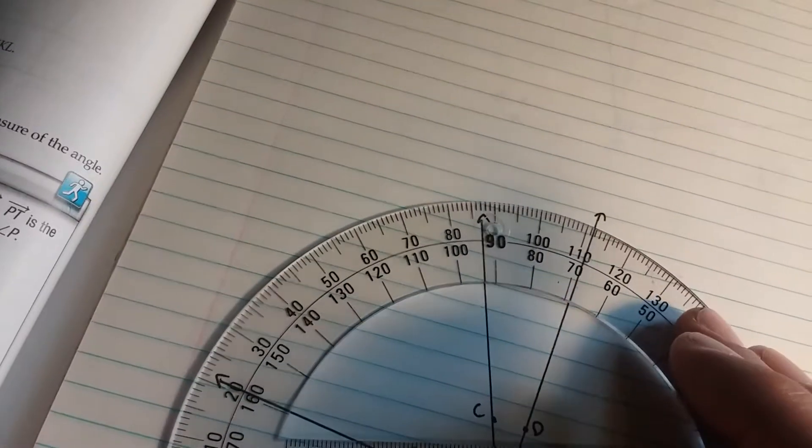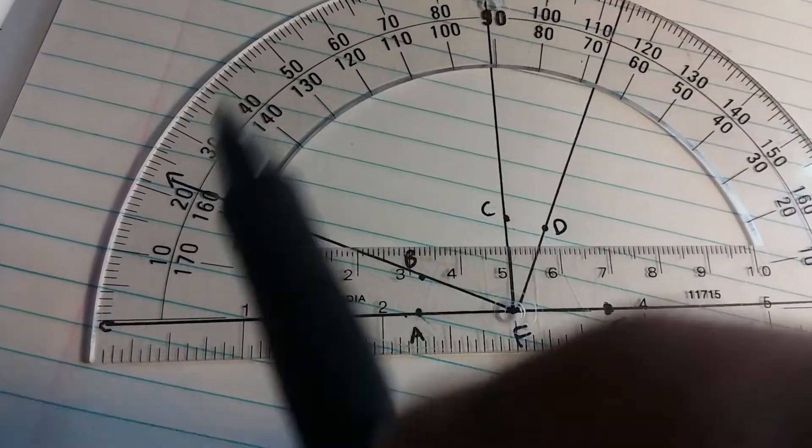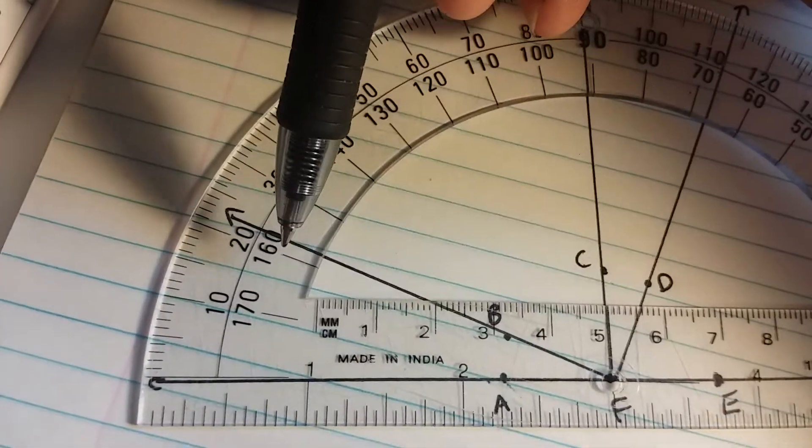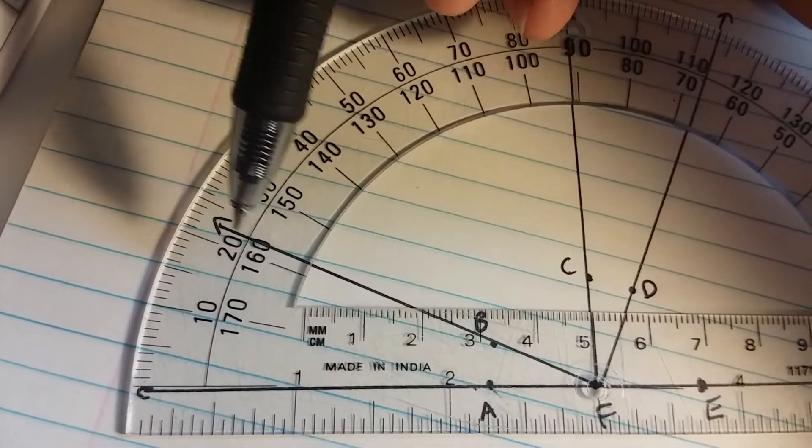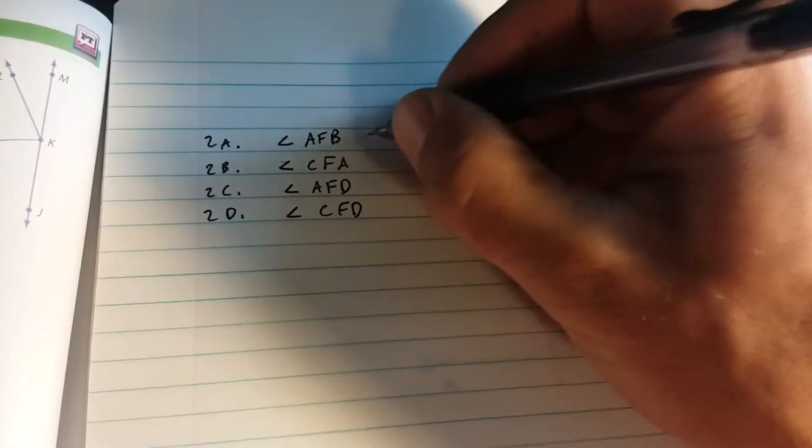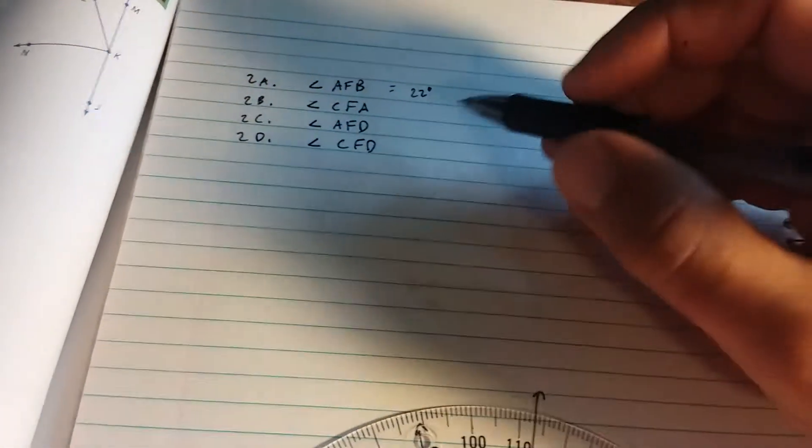All right, now I'll measure them for you. AFB is going to be an acute angle. So I know it's not 157 here. It's going to be 21, 22. I'm going to say 22 degrees approximately. If you had one degree more or one degree less, that would be okay.